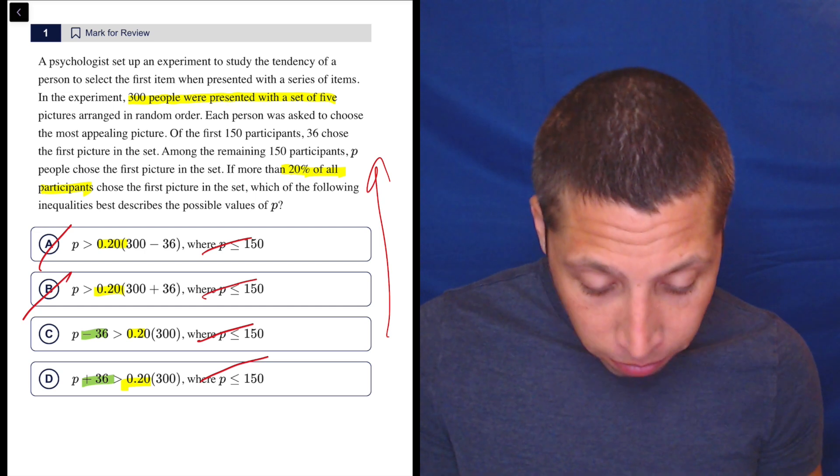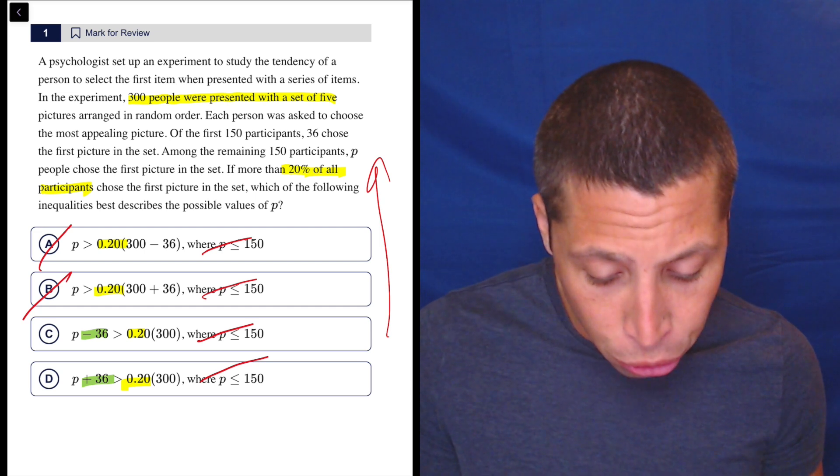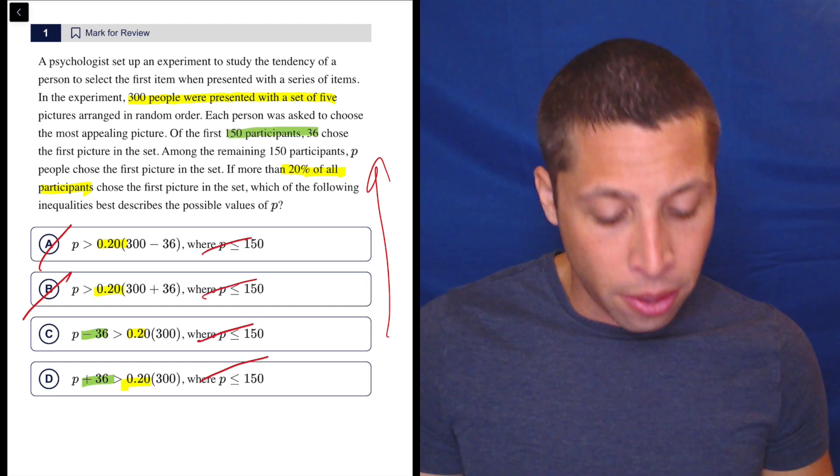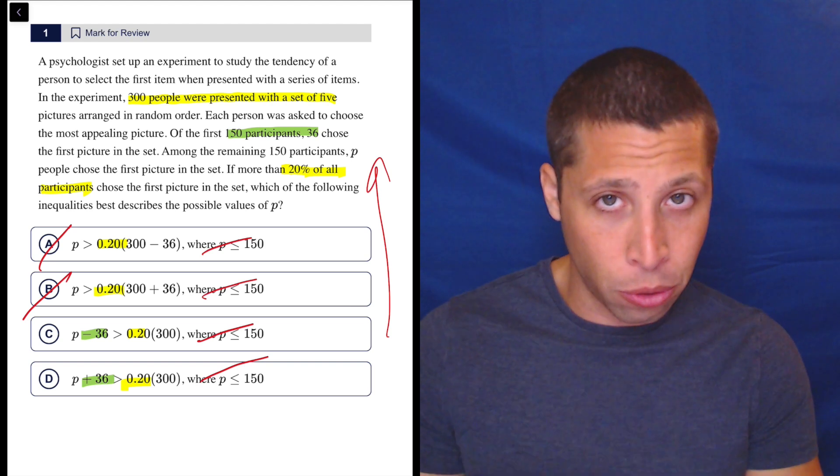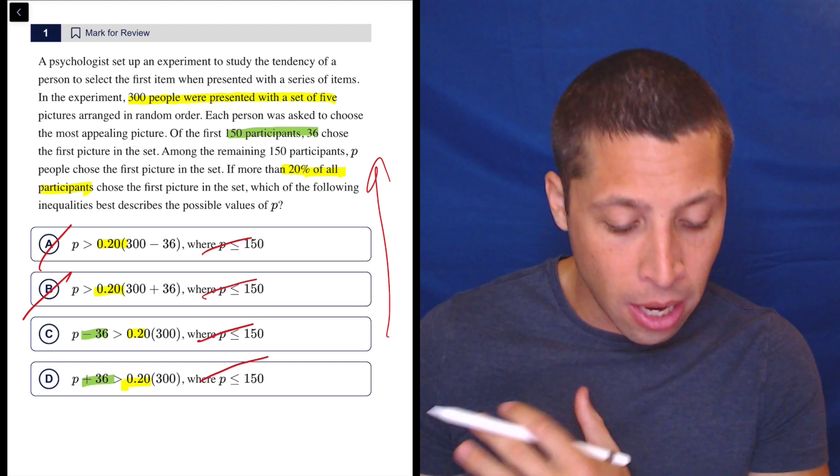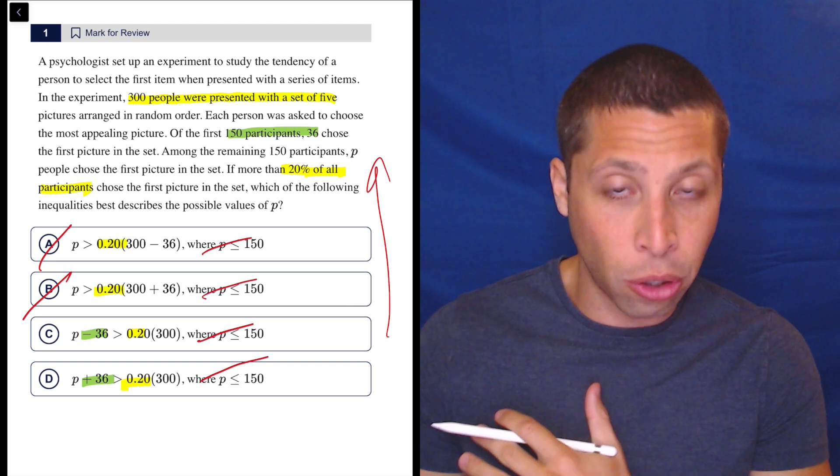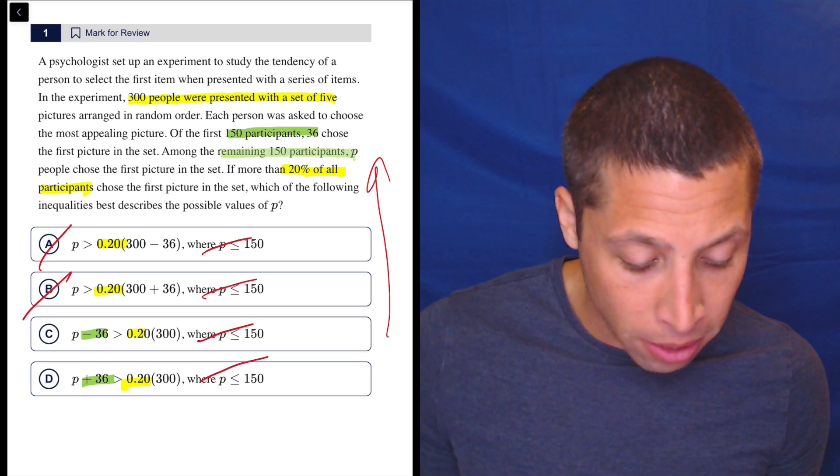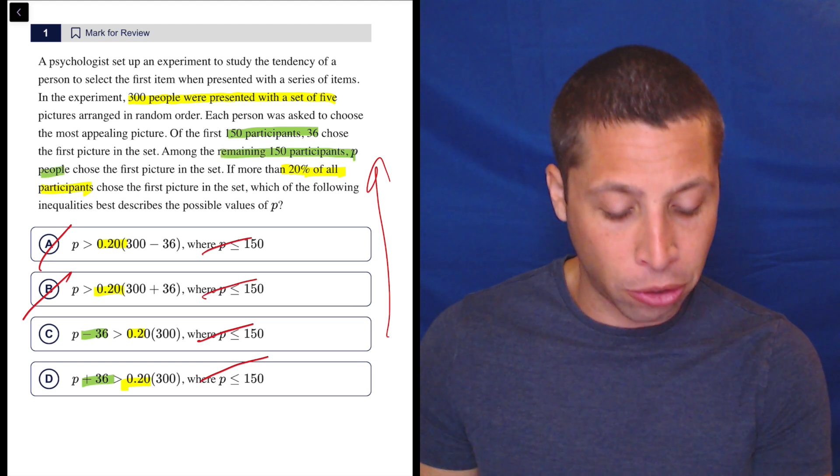So I need to know what is P? What is the 36? Let's see what's going on. Each person was asked to choose the most appealing picture. Of the first 150 participants, 36 chose the first picture in the set. So there's 150. So half the people are choosing, or half the people go first, I guess. And then 36 of them are choosing the first picture. Among the remaining 150 participants, P people chose the first picture in the set.